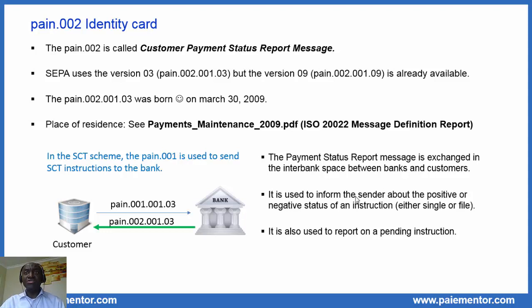As the name suggests, the PAIN.002 is used by the debtor bank to send status reports to its customer, and those reports are related to the processing of the instruction that the debtor bank received from the debtor. The debtor bank is informing its customer about what happened after the message was received and processed. According to the SEPA guidelines, the PAIN.002 is sent only if there are rejections. But in the ISO 20022 standards, things are different — the customer payment status report message can also be used to inform the sender about positive statuses, or to report on pending instructions or transactions. This tells us that the PAIN.002 usage is very restricted in the SEPA implementation.